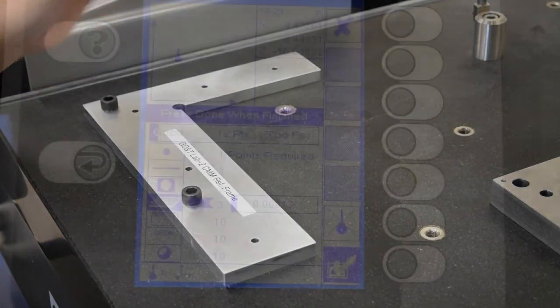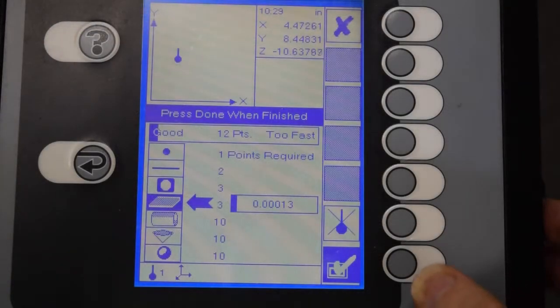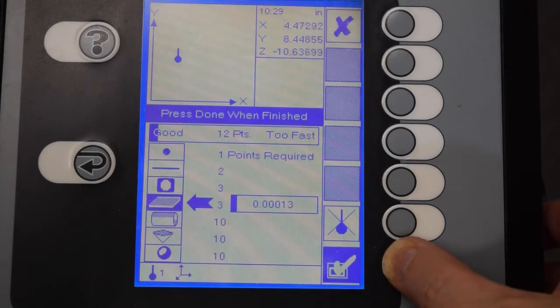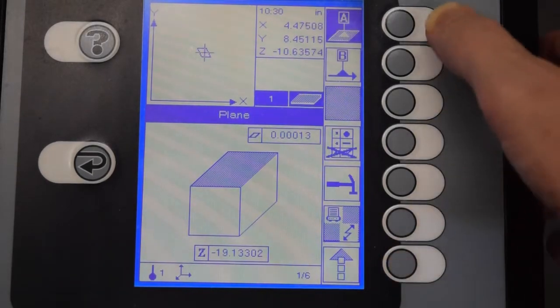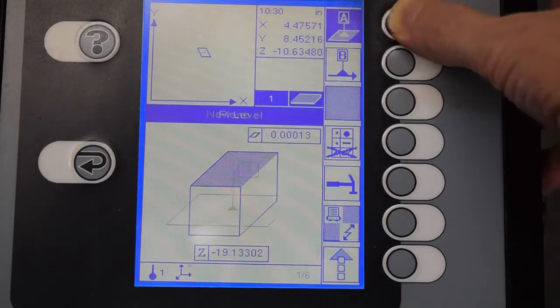Now we've made the measurement. Now watch the sequence of button presses here. We're going to save the measurement, scroll down, and then at the top you'll see a button to make that measurement datum A.